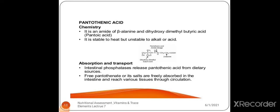Pantothenic acid: it is an amide of alanine and dihydroxy dimethylbutyric acid. It is stable to heat but unstable to alkali or acid. For absorption, intestinal phosphatases release pantothenic acid from dietary sources. Free pantothenic acid or its salts are freely absorbed in the intestine and reach various tissues through circulation.